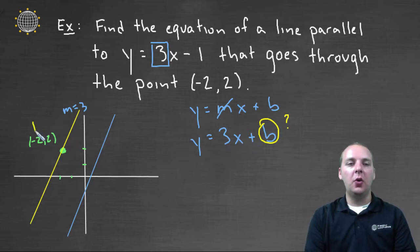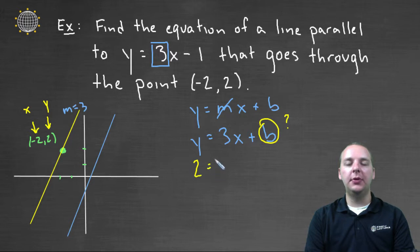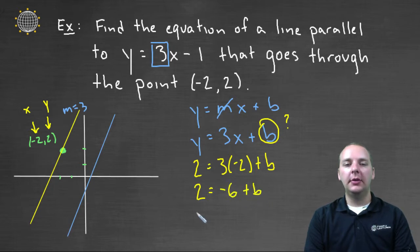And sure enough, they say when x is negative two, the y should be positive two. That's what this line going through that point means. And so let's do that. Let's change y to positive two, and we'll make the x negative two. So we'll have two equals three times negative two plus b, and so two equals negative six plus b, and so b would be equal to eight.